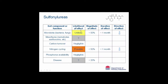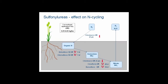Moving on to the sulfonylureas, there is a lot less data than there is for glyphosate, and not many studies have focused on disease or the meso-fauna. What we have found is there appears to be quite an interesting effect on nitrogen cycling — there is a possible effect on nitrogen cycling. Again the duration of the effect doesn't seem to be more than one month in the short term, but unlike glyphosate where we are seeing some increases and some decreases, the sulfonylureas generally seem to have a negative impact.